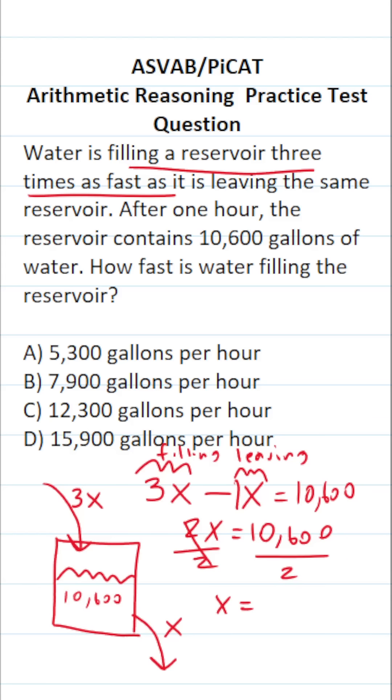Now you should be able to do this part mentally. 10 divided by two is five. 600 divided by two is 300. Now X refers to the rate at which water is leaving the reservoir. So we know it's leaving at a rate of 5,300 gallons per hour.